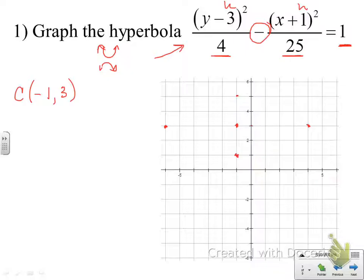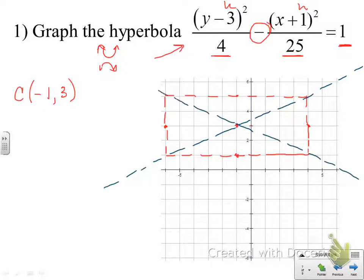But what we're going to do instead of connecting those into that oval shape is we're just going to draw a vertical and horizontal line through each of those points so that we come up with this rectangle. And then we're going to connect the corners of the boxes with the center and draw in those asymptotes. They're dashed lines because it's just really a guideline for our hyperbola.